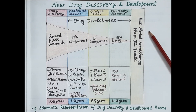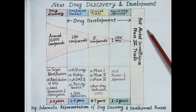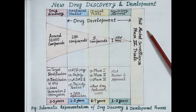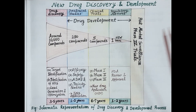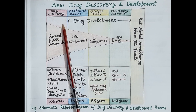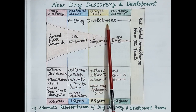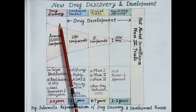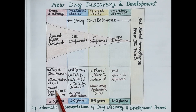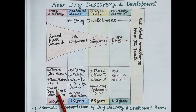This figure gives a compiled schematic representation of various stages in new drug discovery and development. The entire process has two main stages: the first stage is new drug discovery and the second is new drug development. The main purpose of new drug discovery is to identify leads.